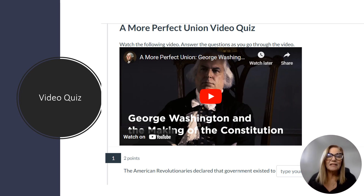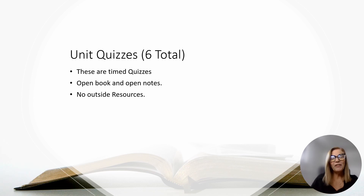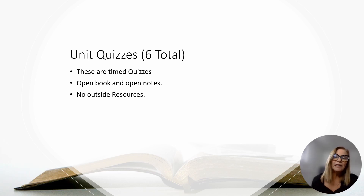The reason the first video is 20 minutes is because it's more of a documentary-type movie that gives you an overview of the making of the beginning of the Constitution. Unit quizzes — you'll have six total. They are timed quizzes: some are 30 minutes, some are 40 minutes. They're open book and open notes, and always due on the last day of the unit. You can use no outside resources — using outside resources is considered academic dishonesty and you could fail the course. Please just use your book and notes, but do not take the quiz until you're ready because it's timed.